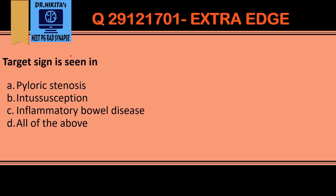The target sign is seen in all the conditions mentioned here. A target sign is basically an inner circle and an outer circle, so it can also be called a donut sign.